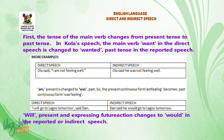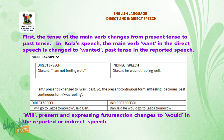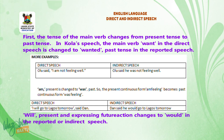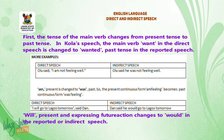More examples. Olu said, 'I am not feeling well.' — Olu said he was not feeling well. The present continuous tense 'am feeling' is replaced with 'was feeling', the past continuous tense, by changing 'am' — which is present — to its past form.